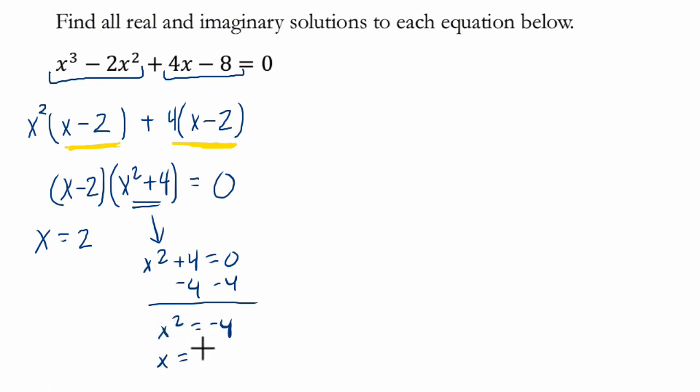So x equals the positive or negative square root of negative 4, which equals the positive or negative square root of negative 1 times square root of 4, which equals the positive or negative i times 2, or positive or negative 2i.